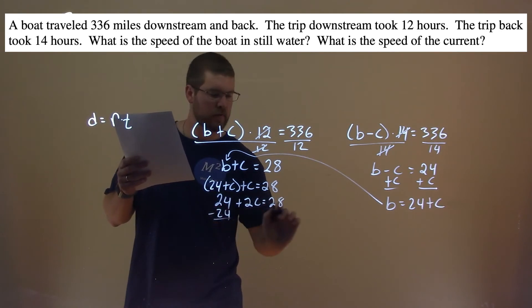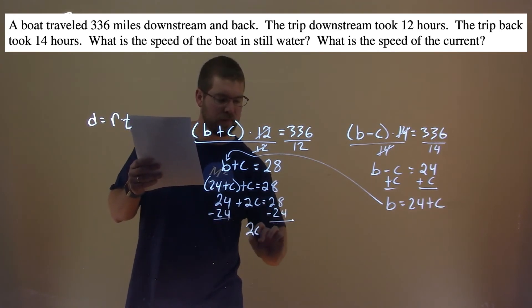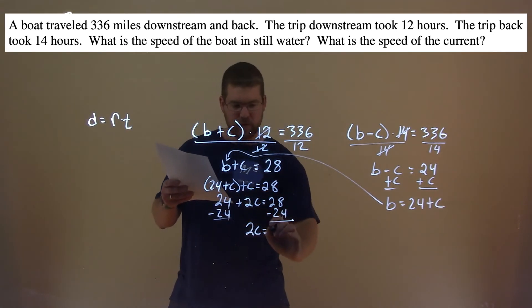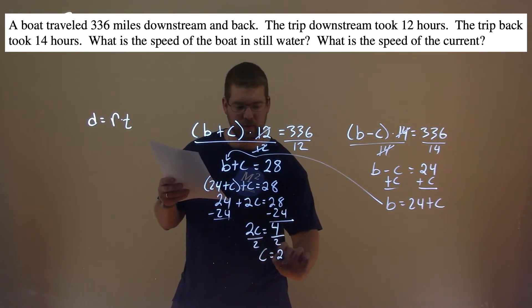So subtract 24 from both sides, and 2C equals 28 minus 24, which comes out to be 4. Divide both sides by 2, and C equals 4 divided by 2 is 2.